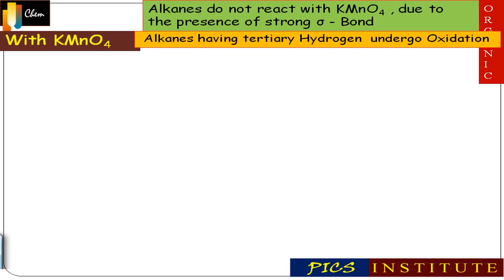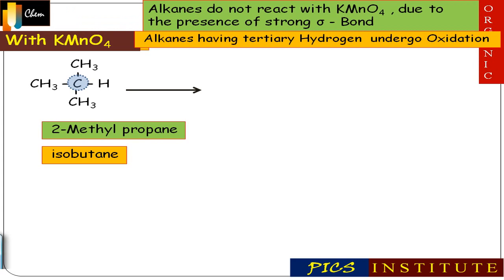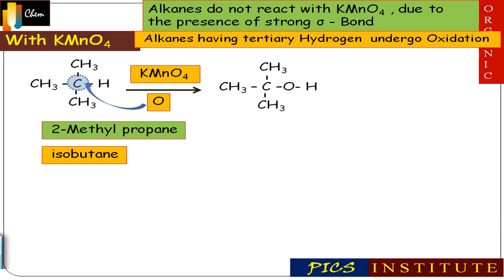Only those alkanes which possess tertiary hydrogen undergo oxidation in the presence of KMnO4 to form alcohol. For example, in a molecule with one tertiary carbon, the hydrogen attached to this carbon is tertiary hydrogen. On reaction with KMnO4, the reactant gives alcohol. Incorporation of oxygen between carbon and hydrogen results in formation of alcohol. So only those alkanes which possess tertiary hydrogen react with KMnO4.